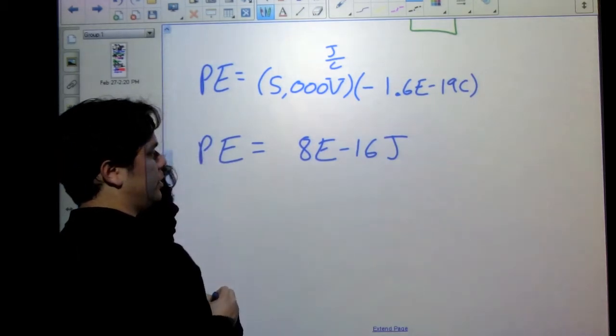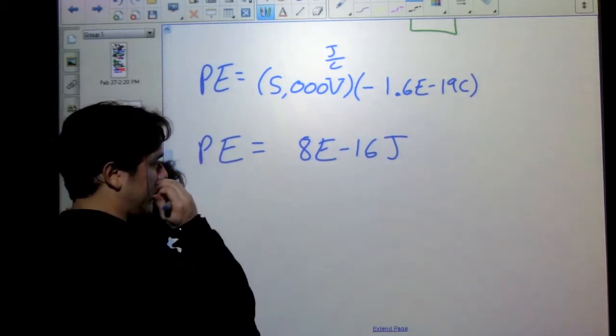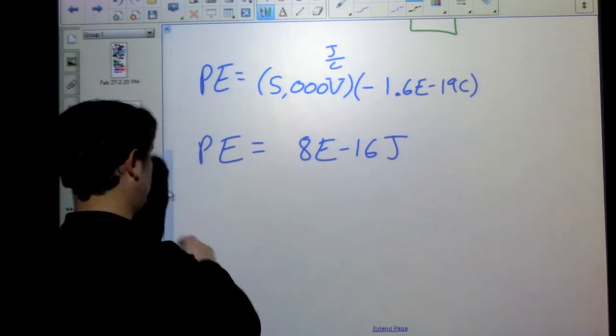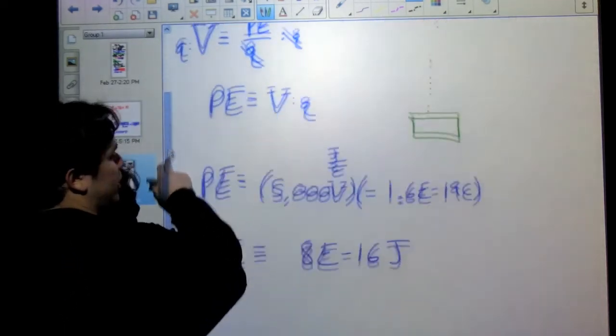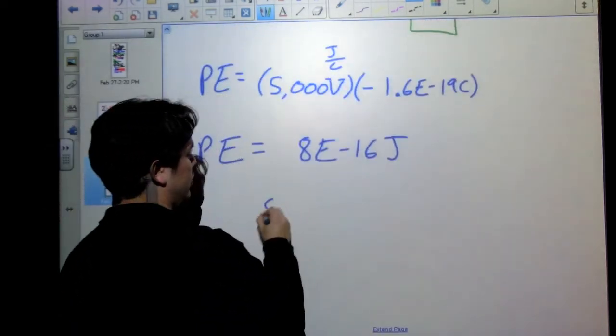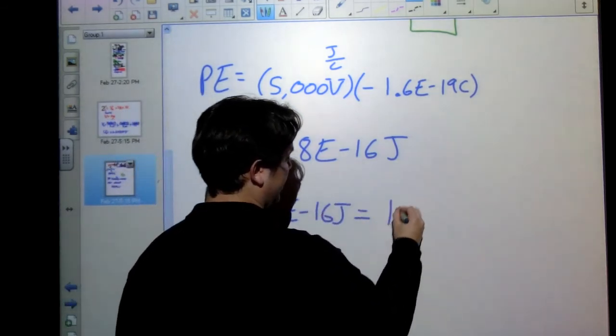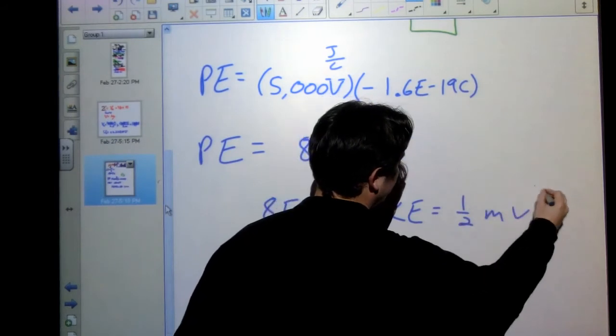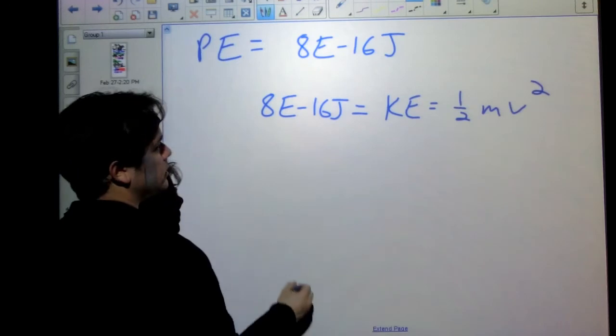All right, so where did all this energy end up going? We lost it from our potential energy. It's being put into that electron. Where is it going to go? Well, the electron, like I said, is going to accelerate down this column, so it's probably going into kinetic energy. So I know that this energy gets put into my kinetic energy, which is equal to one half mv squared, where v is our velocity.